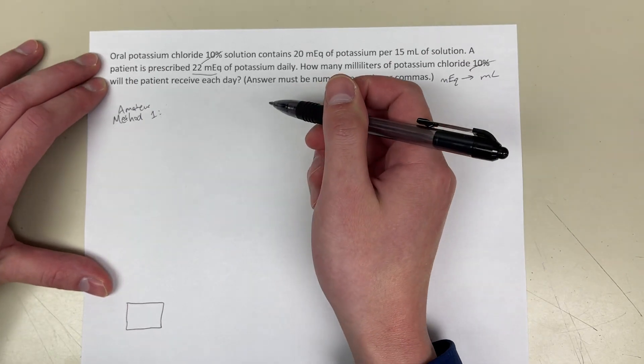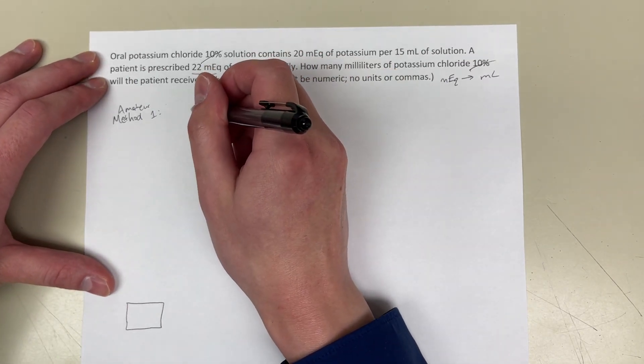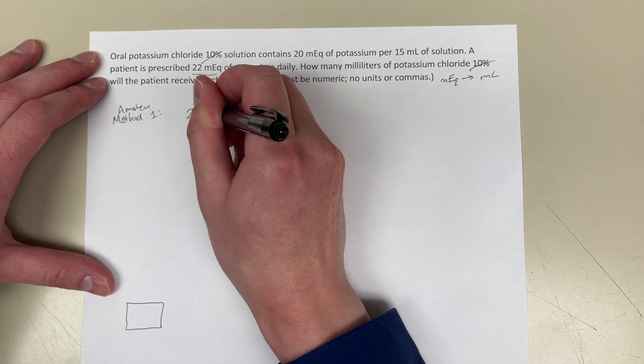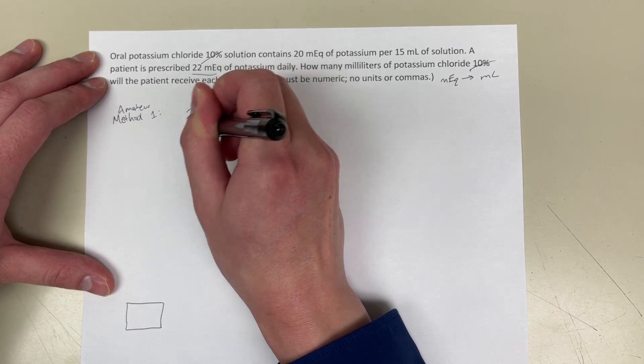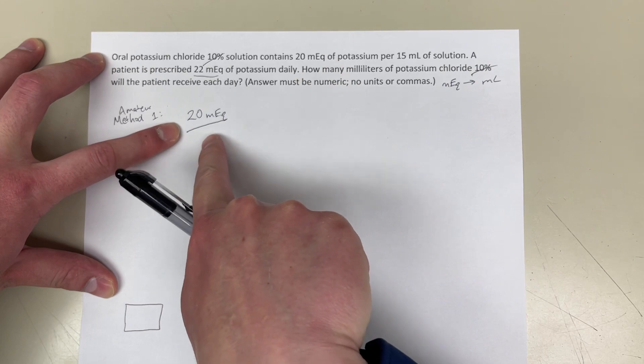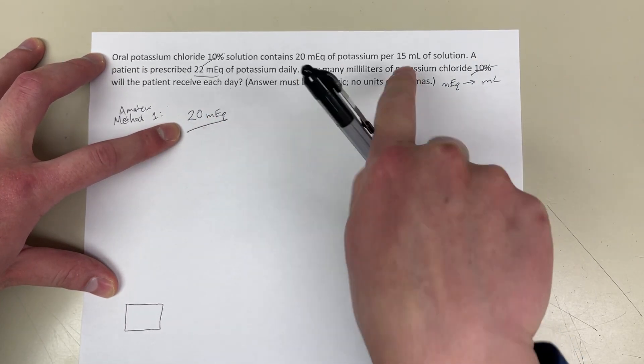So, I'm going to use the cross multiplication method. So, our stock concentration is 20 milliequivalents per 15 milliliters.